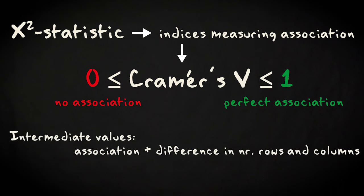However, at intermediate values the index is not purely measuring association. It also increases when the difference between the number of rows and columns in the table increases.